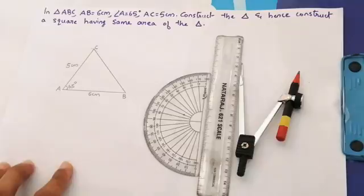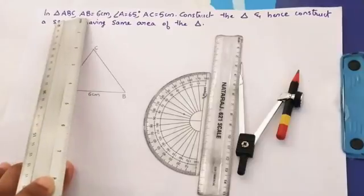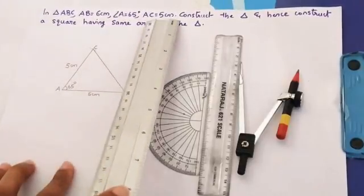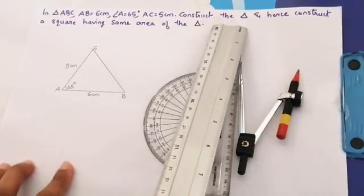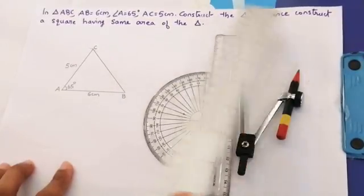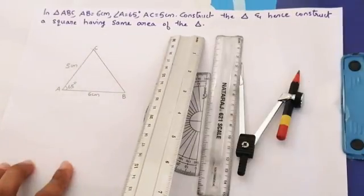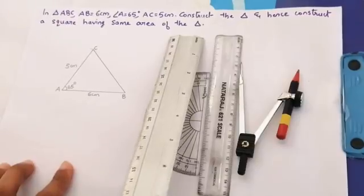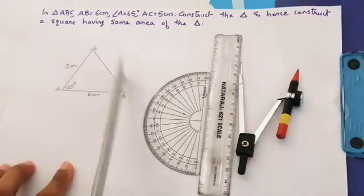Let us proceed. Here the question is: In triangle ABC, AB equals 6 centimeter, angle A equals 65 degree, AC equals 5 centimeter. They are asking you to construct the triangle and hence construct a square having same area of the triangle. You know that these construction questions are from the chapter Circles, chapter number two.